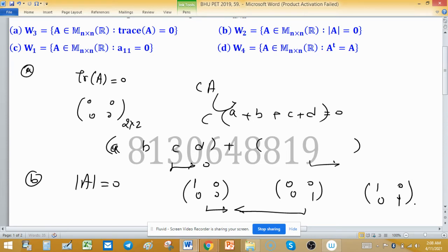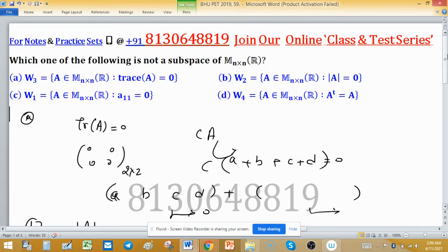The determinant of this matrix is not zero, meaning the sum of two matrices is not in W₂. So W₂ is not a subspace, and we are interested only in which doesn't form a subspace, so option B is the correct choice.